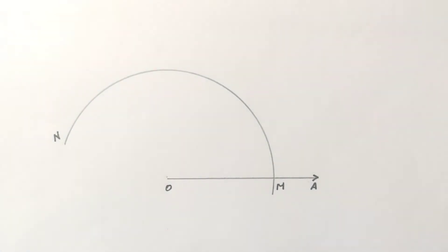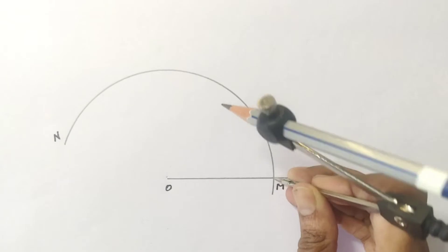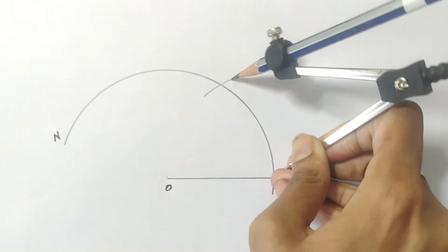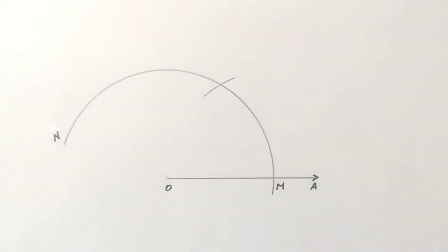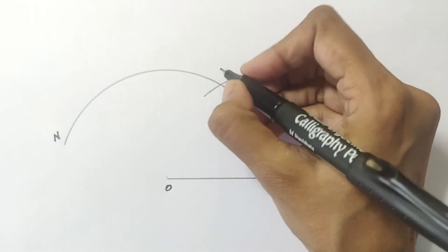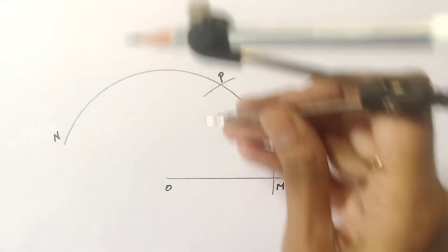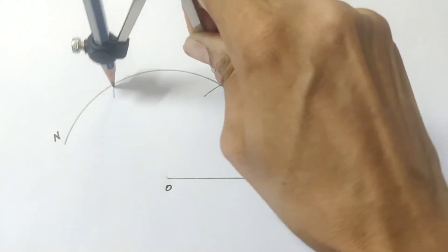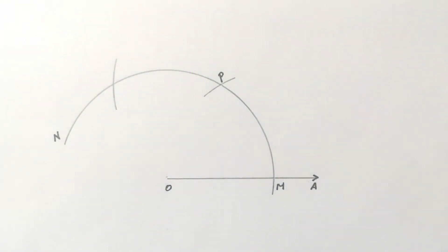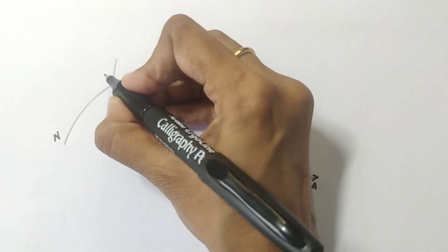With the same radius, with M as center, cut the previously drawn arc. Let this point of intersection be P. With the same radius, with P as center, draw another arc, cutting the previously drawn arc MN at point Q.